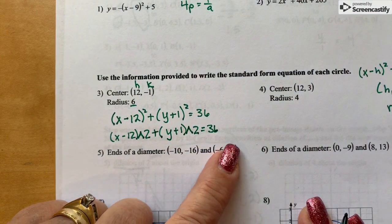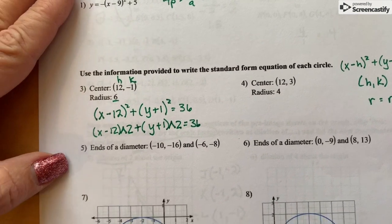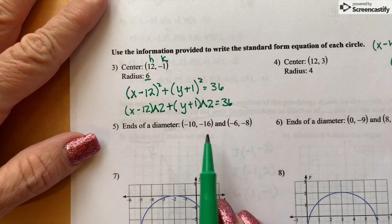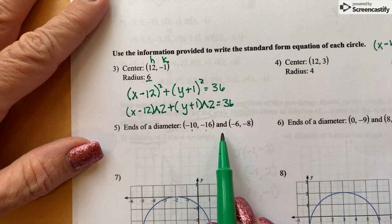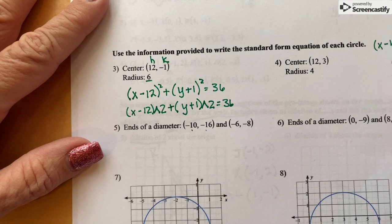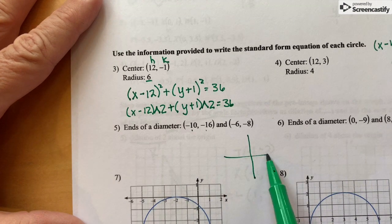You can resubmit this until you get all of the answers correct. So you need to do number four by yourself. And then the ends of the diameter are at negative 10, negative 16, and negative 6, negative 8. So you probably want to maybe grab a piece of graph paper and graph that.